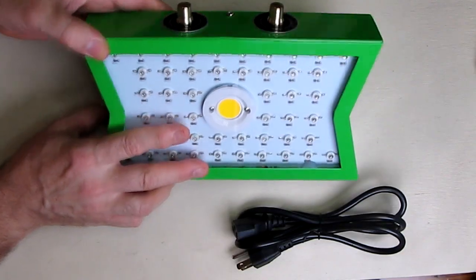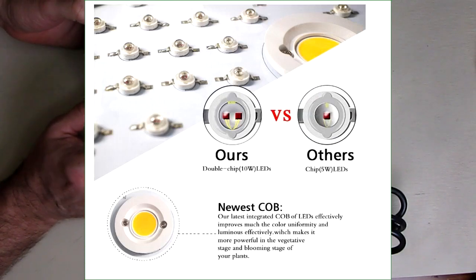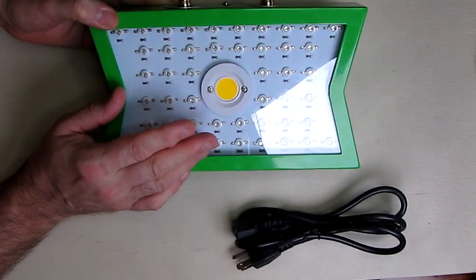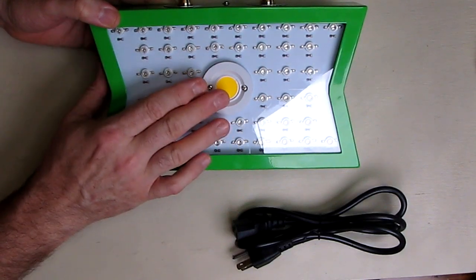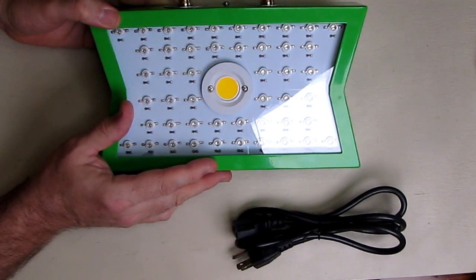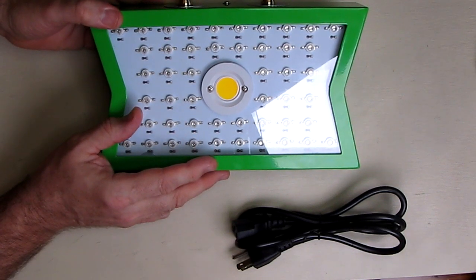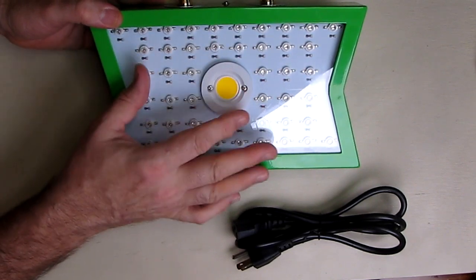The reason why this is unique is that the angle of this combined with these produces a really nice PAR output and coverage. Now PAR is the parabolic amortization reflection and that comes from the original term from halogen lights but it's still used for LEDs. This is going to have a very nice even disbursement of the light.